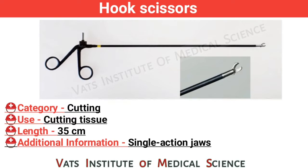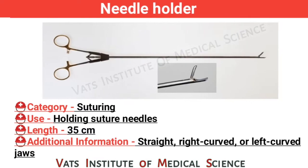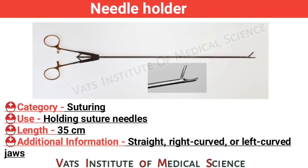Hook scissor. Category: cutting. Use: cutting tissue. Length: 35 cm. Additional information: single action jaw. Middle hook scissor: category cutting, use cutting tool, length 35 cm. Needle hook scissor: category suturing, use holding suture needle, length 35 cm. Additional information: straight, right curved, or left curved jaw.